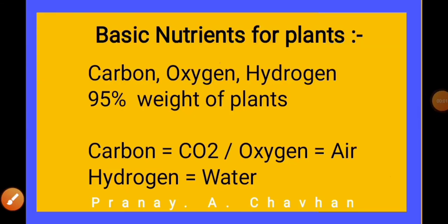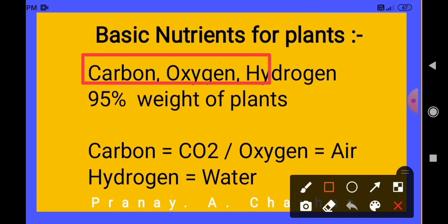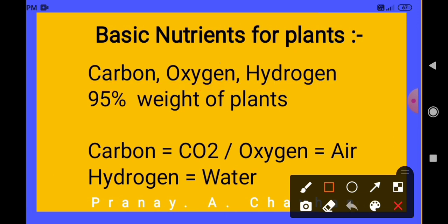In this video we take a look at the basic nutrients for a plant. Every organism needs nutrients, and plants also need nutrients. So which nutrients are known as the basic nutrients? Not all nutrients qualify — only some of them do. Those are carbon, oxygen, and hydrogen. These three are known as the basic nutrients.